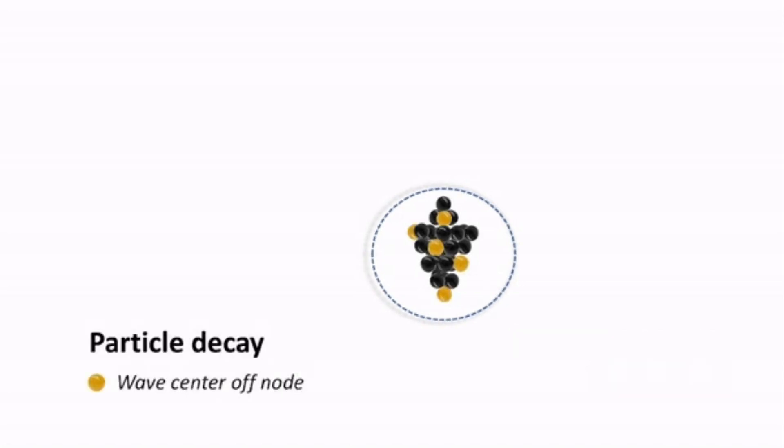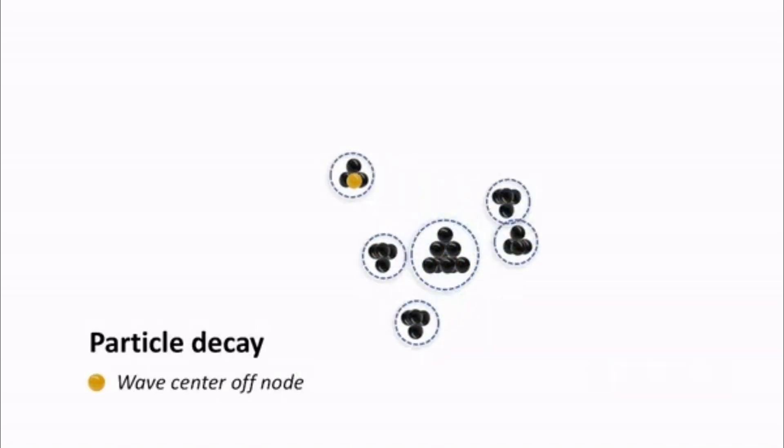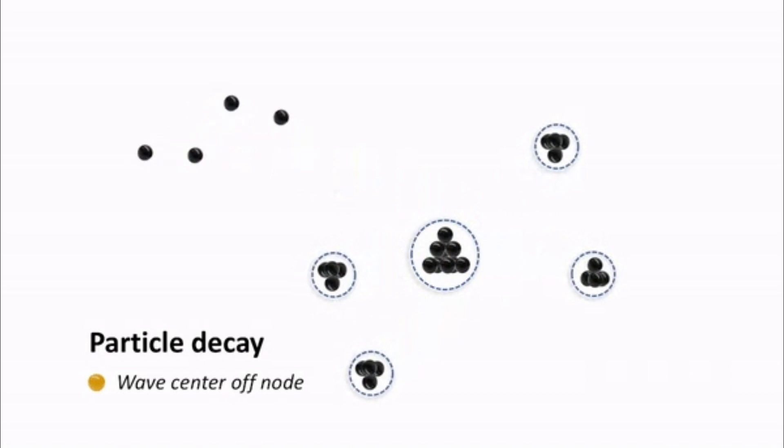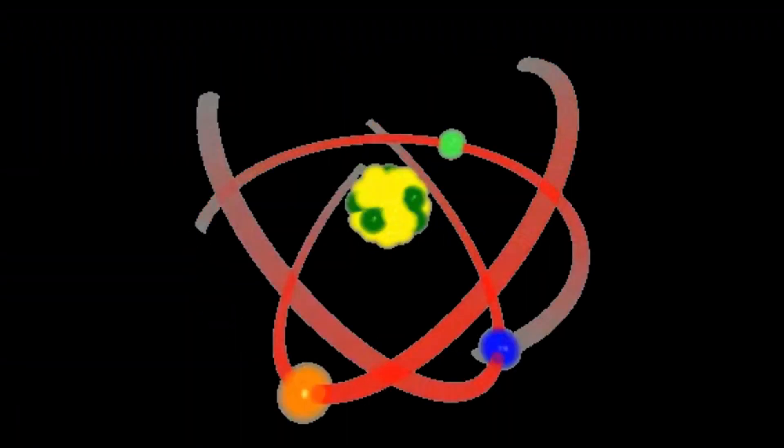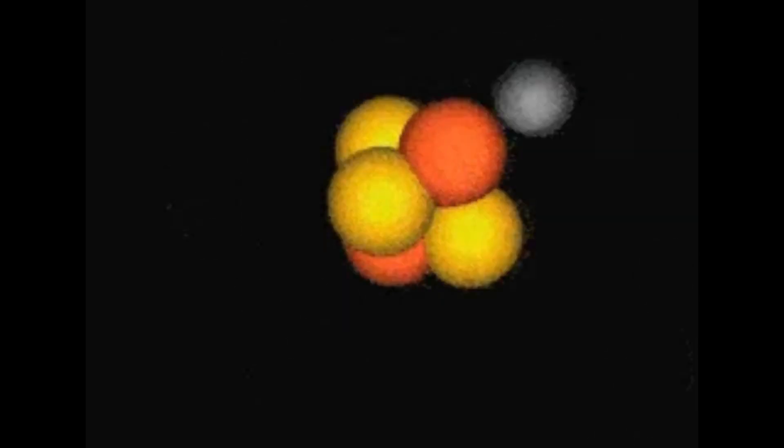The scientists conducted an experiment called G-2. During this experiment, muons, subatomic particles, were accelerated along a 50-foot diameter ring. They were circulated around this ring approximately 1,000 times at almost the speed of light.